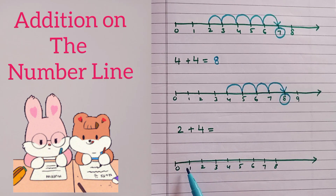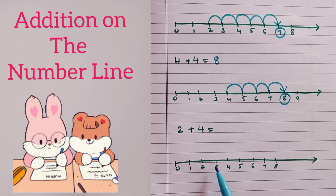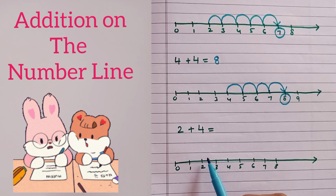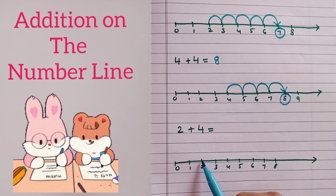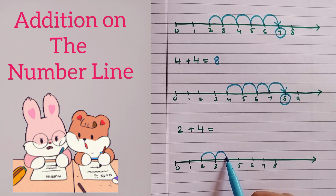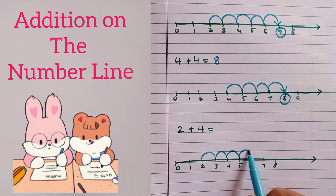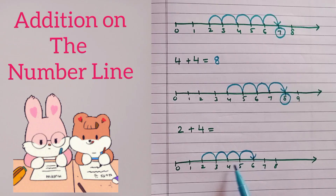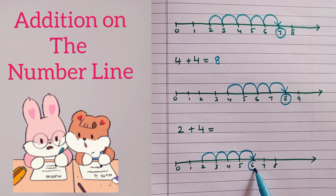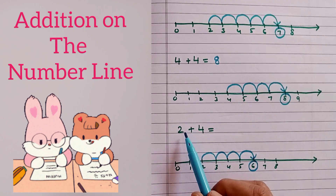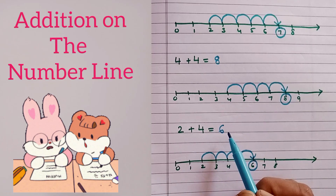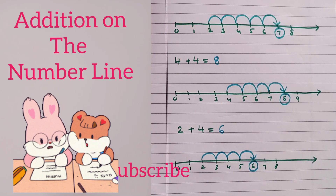Now let's take one more example: two plus four. On the number line we will start with two and go up four numbers — one, two, three, four. We have reached six, so the answer is two plus four is equal to six. Thank you.